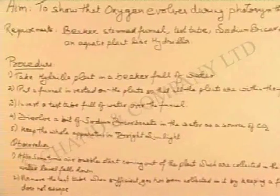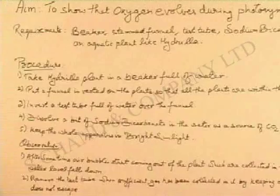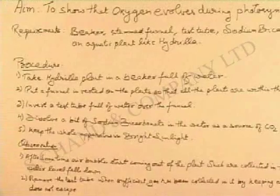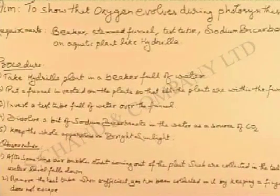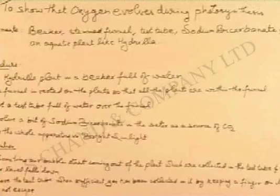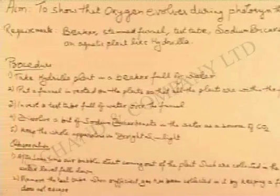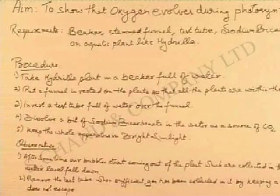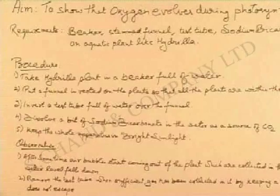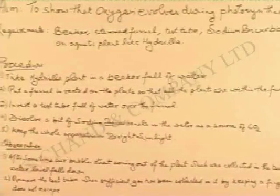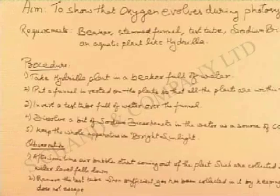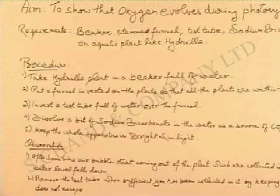Procedure: Take a hydrilla plant in a beaker full of water. Put a funnel inverted on the plant so that all the plants are within the funnel. Invert a test tube full of water over the funnel. Dissolve a bit of sodium bicarbonate in the water as a source of carbon dioxide. Keep the whole apparatus in bright sunlight.